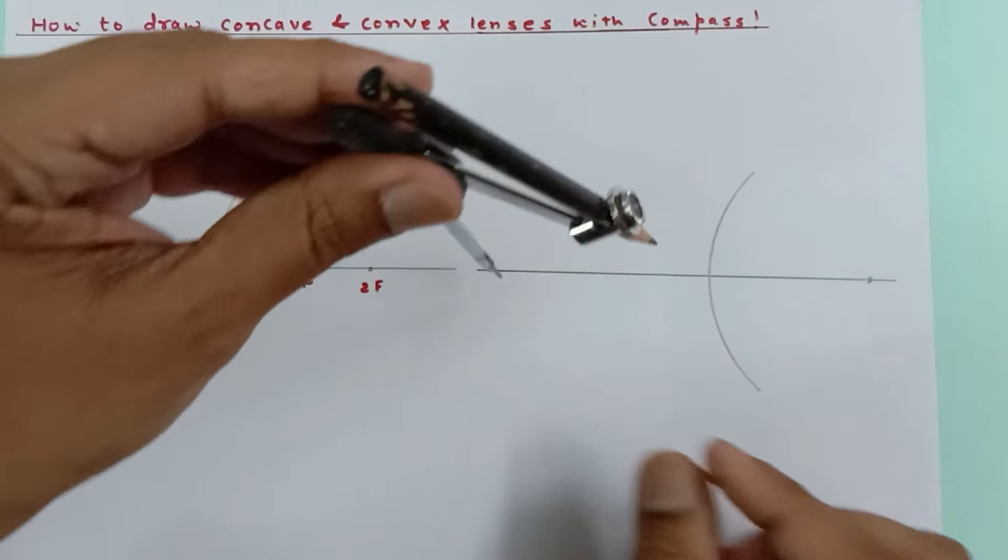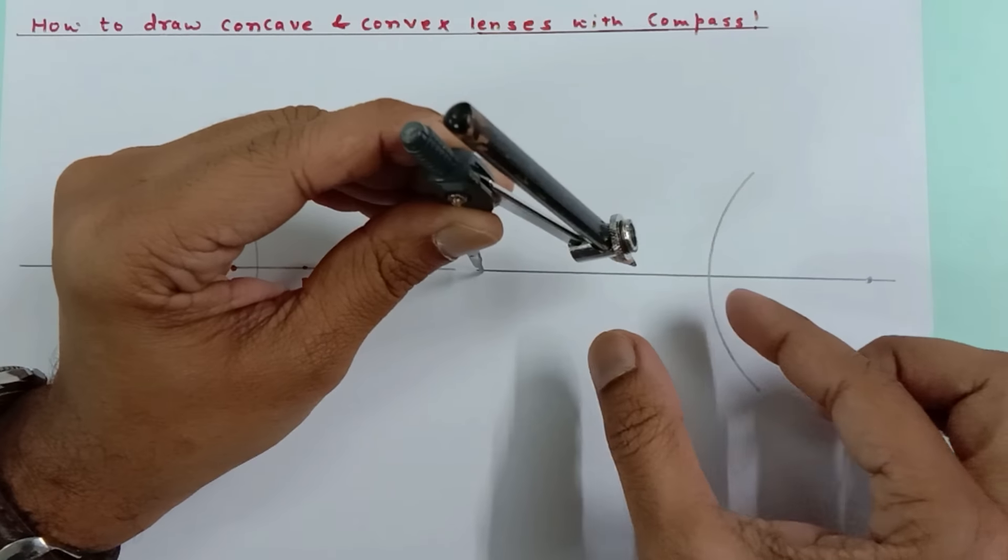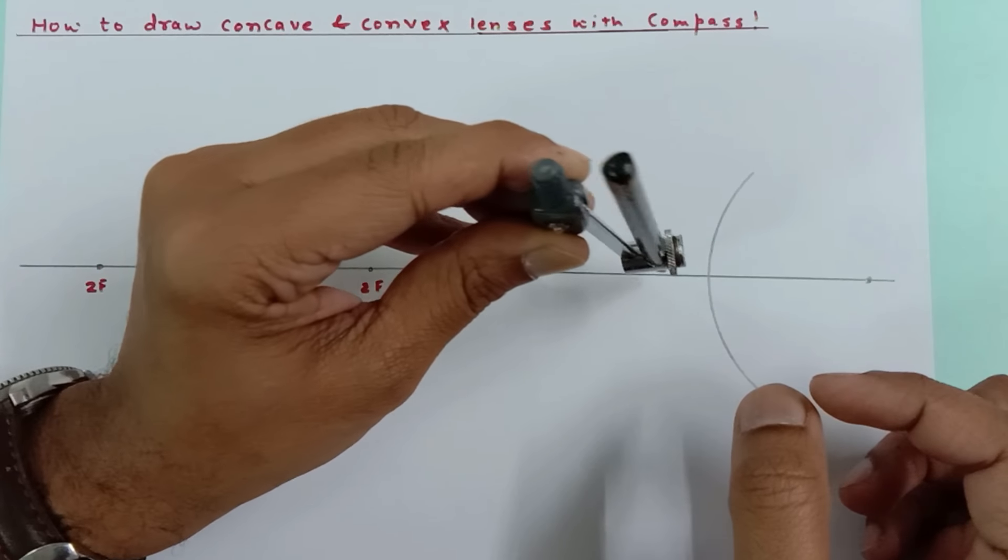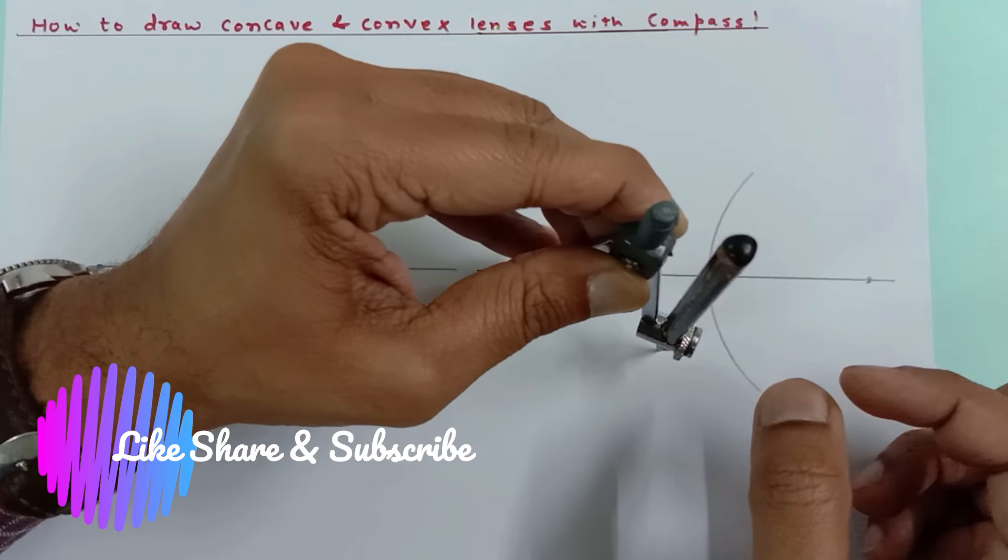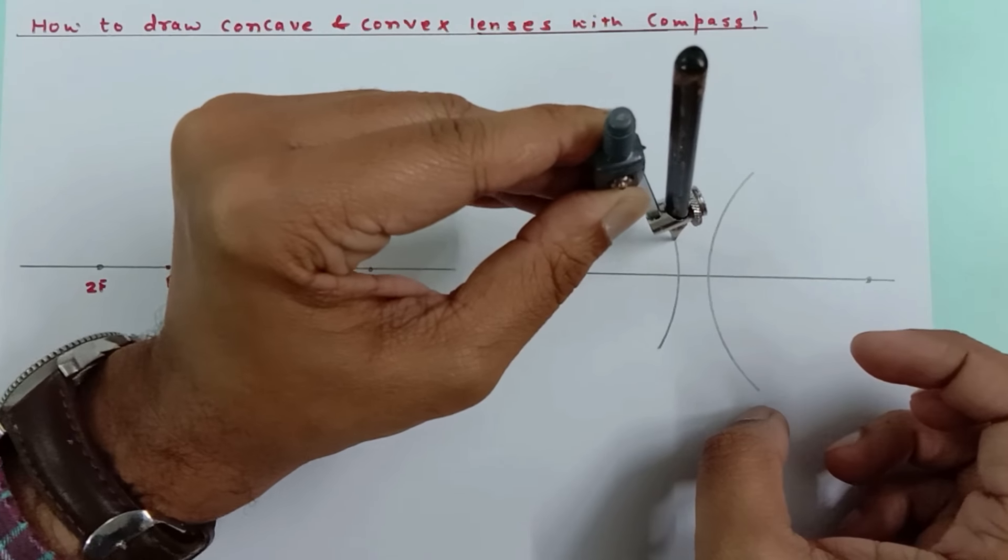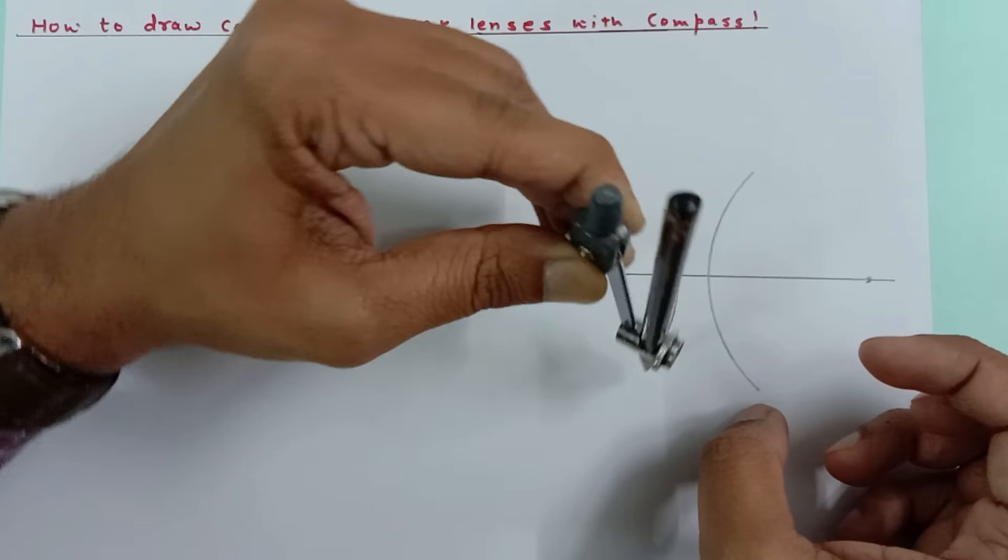Now from this side, if I take it too far away, then the lens would become very thick. Again, if I want to make the lens thin, then this would be the arc. Correct.